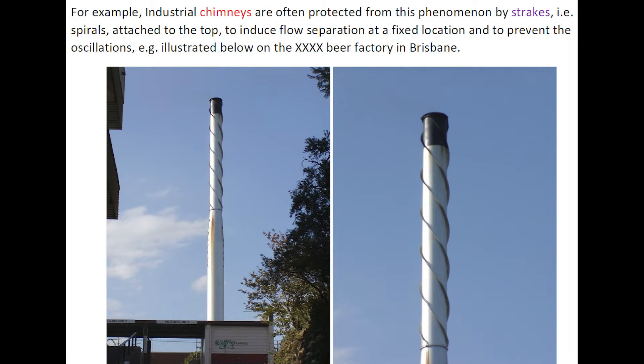An example is the industrial chimneys, often protected from this phenomenon by strakes, that is, spirals attached at the top to induce flow separation at a fixed location and prevent oscillation. This is illustrated in this photograph by the XXXX beer factory in Brisbane, Australia.